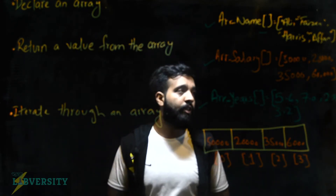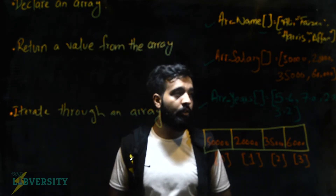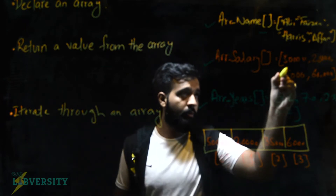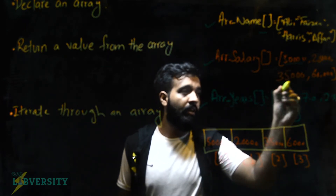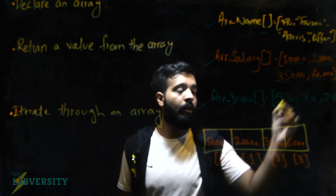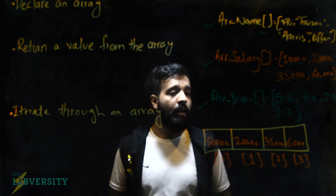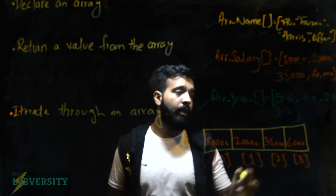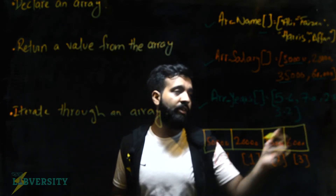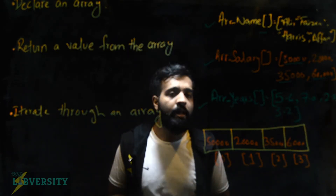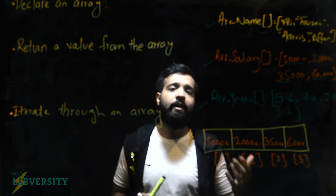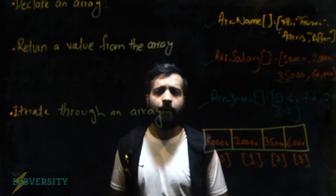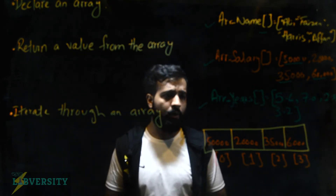Array salary contains 50,000, 20,000, 35,000, and 60,000 — these are whole numbers, signifying the integer data type. Array years contains 5.6, 7.0, and 2.3, meaning it uses the floating point data type, also called real or double.